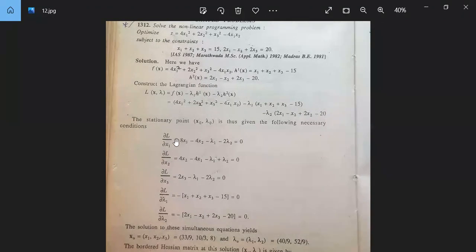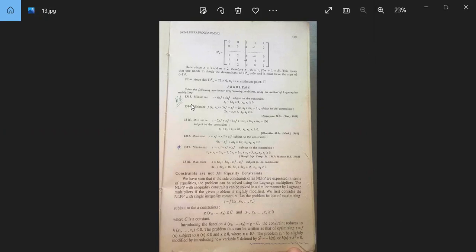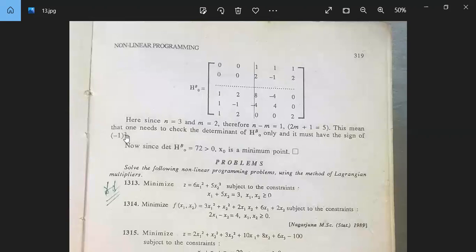Then similarly, del with respect to x_1, we will get 0. This is your bordered Hessian matrix. Here, since n is equal to 3, number of variables, and m is equal to 2, number of constants, therefore n minus m is 3 minus 2 means 1, and 2m plus 1 is 2 times 2 plus 1 means 5. This means that one needs to check the determinant of H^b_0 only.